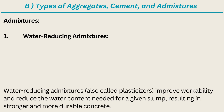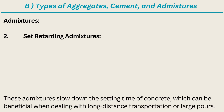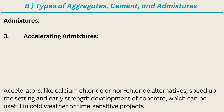Admixtures. Item 1: Water-Reducing Admixtures. Water-reducing admixtures, also called plasticizers, improve workability and reduce the water content needed for a given slump, resulting in stronger and more durable concrete. Item 2: Set-Retarding Admixtures. These admixtures slow down the setting time of concrete, which can be beneficial when dealing with long-distance transportation or large pours. Item 3: Accelerating Admixtures. Accelerators, like calcium chloride or non-chloride alternatives, speed up the setting and early strength development of concrete, which can be useful in cold weather or time-sensitive projects.